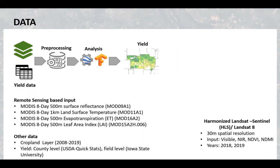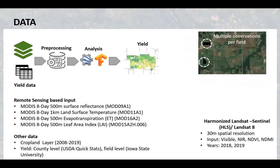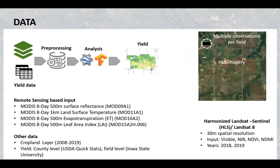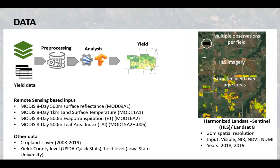In order to generate label data, historical yield time series were accessed at a county level based on the USDA QuickStat database, and at a field level, data collected by machinery were used. As multiple observations per field were available, they were first aggregated at a 30 meter grid size, and then estimates over large areas were created.